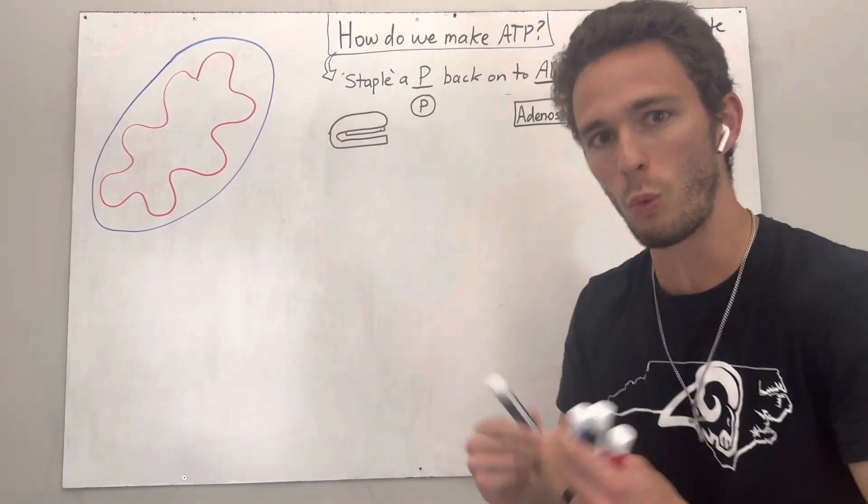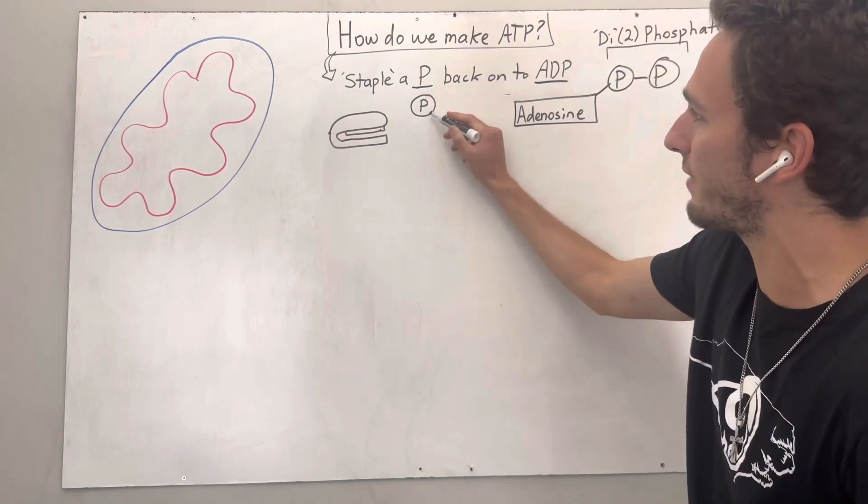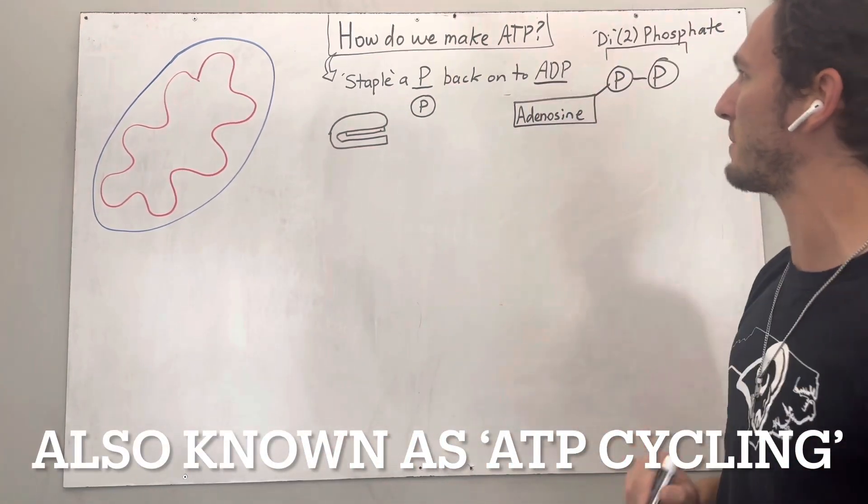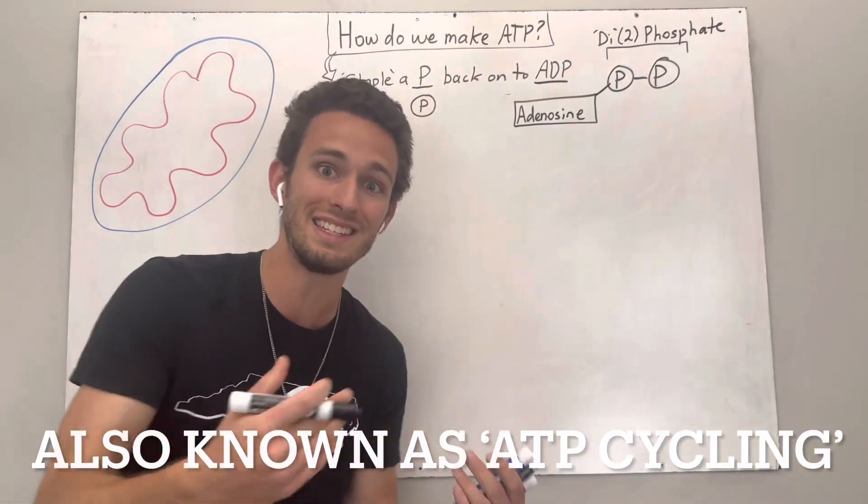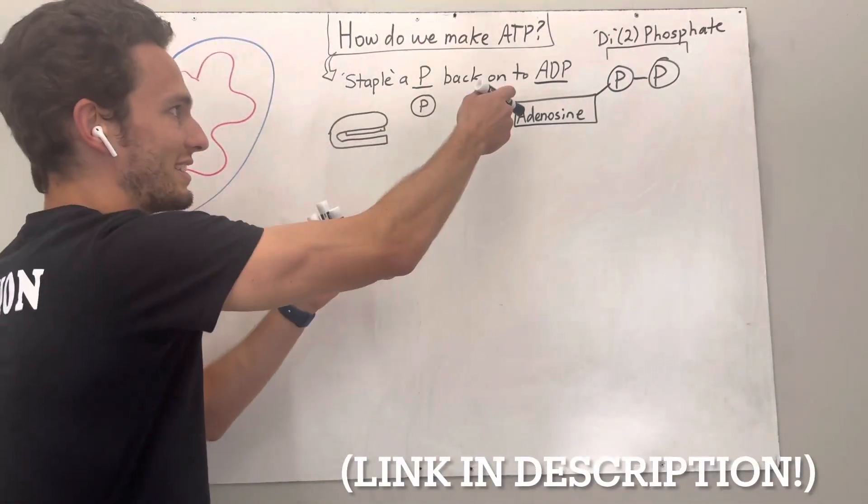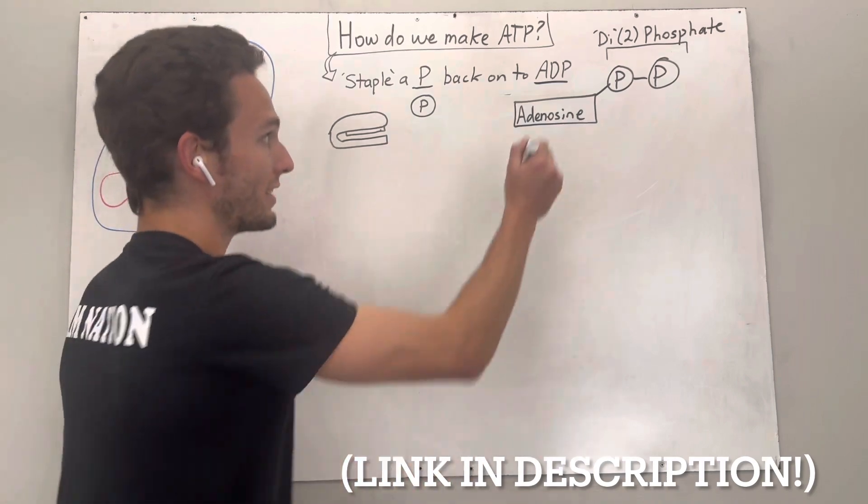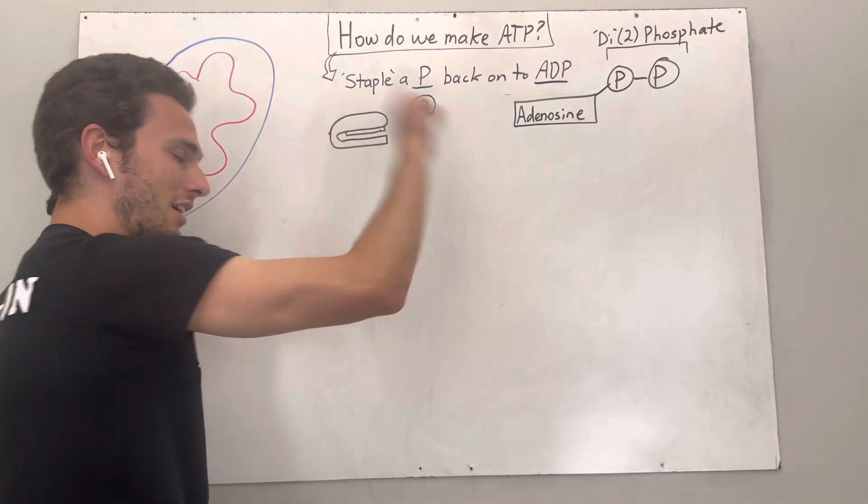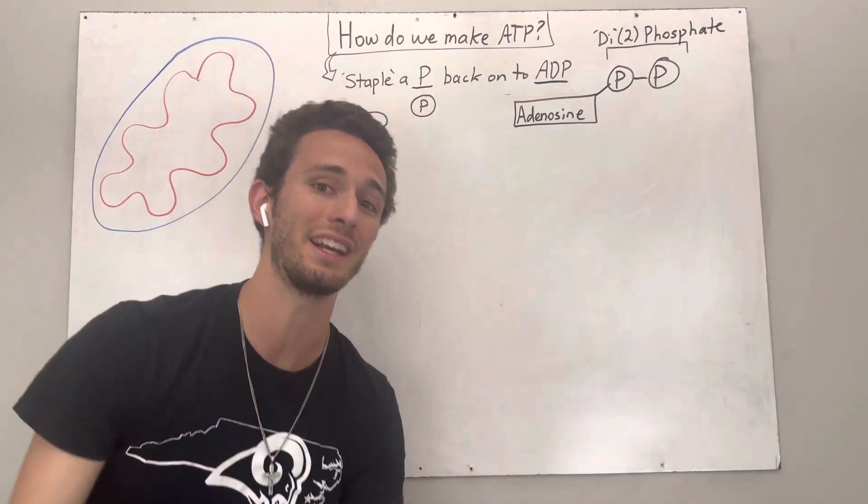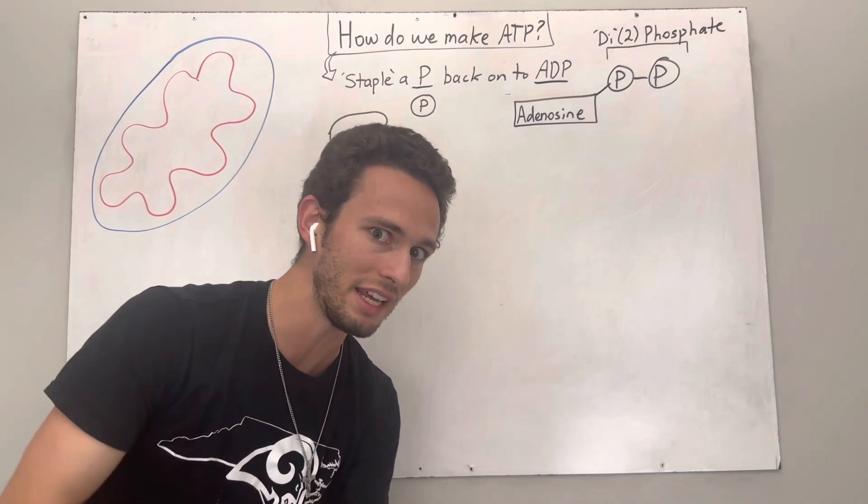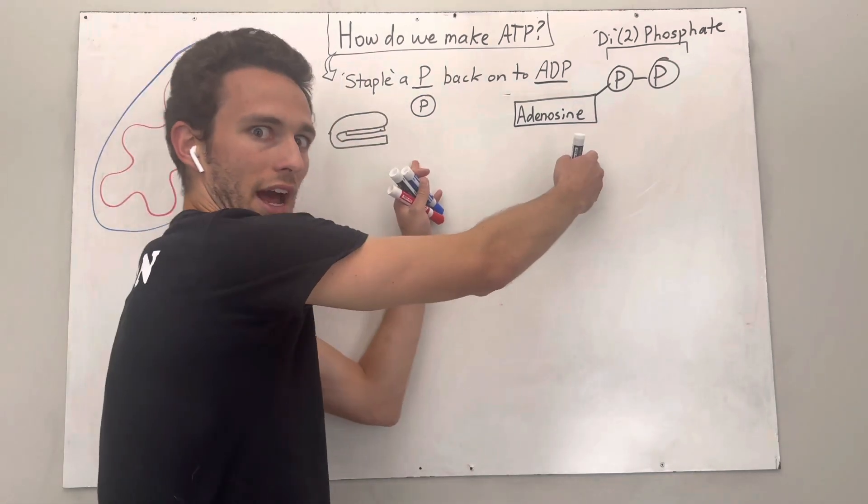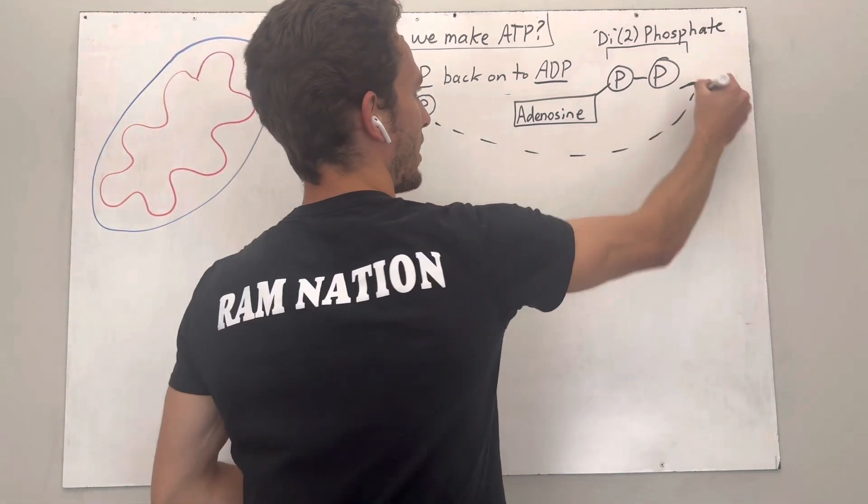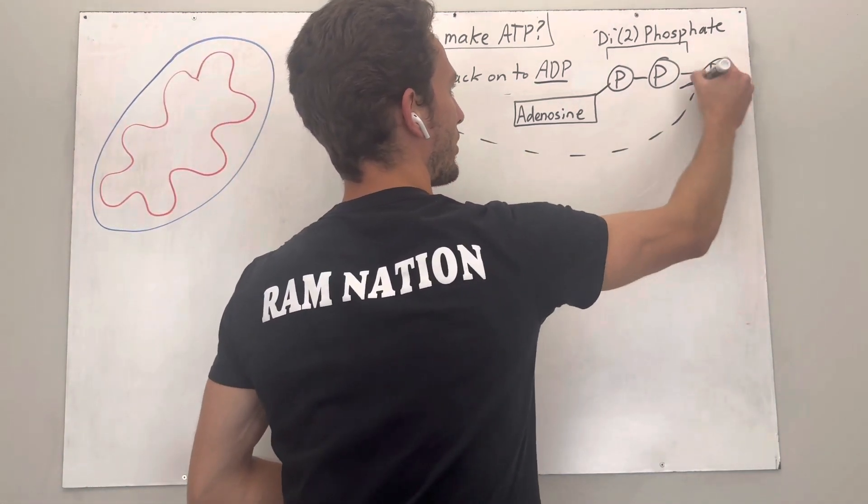First off, the way we do this is we have to take a phosphate all alone and staple it to an ADP molecule. If you watched my video in the past about what ATP is, when we use ATP, we actually form adenosine diphosphate, meaning two phosphates, and a blank phosphate, otherwise known as an inorganic phosphate by itself. So to make ATP, we just have to take these two guys and put them back together. The goal is to staple this phosphate right there to make the ATP molecule.